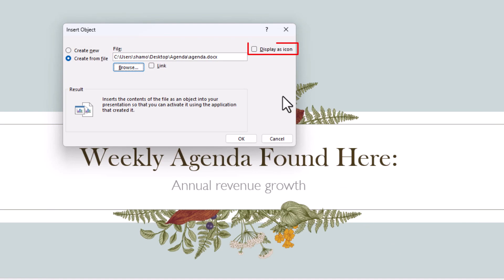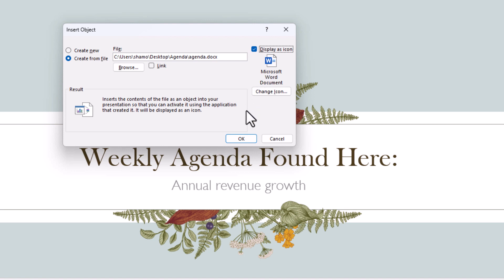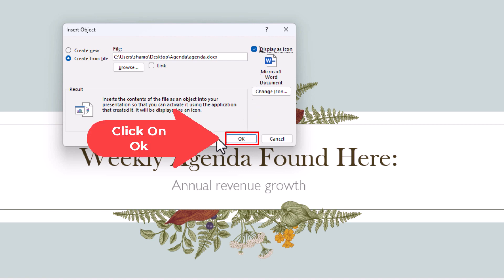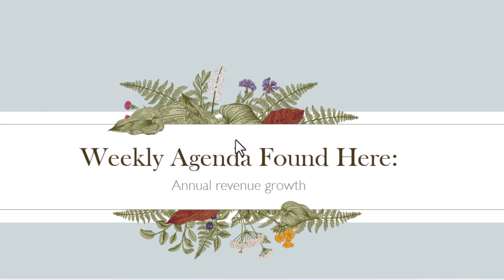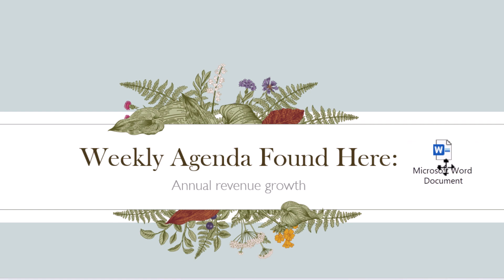Now I am going to display this as an icon, so I am going to check the box next to Display as Icon. Then I will go down to the bottom and click OK. Now you can see my little Word document icon here, and I can stretch the corners to increase its size.